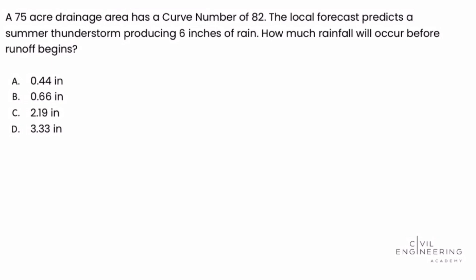A 75-acre drainage area has a curve number of 82. The local forecast predicts a summer thunderstorm producing 6 inches of rain. How much rainfall will occur before runoff begins?